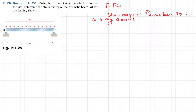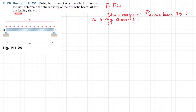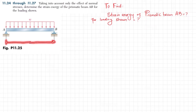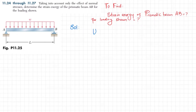Welcome back. Problem 11.25: taking into account only the effect of normal stress, determine the strain energy of prismatic beam AB for the loading shown. This is a simply supported beam AB acted upon by a uniformly distributed load over the length L. We have to find the strain energy of the prismatic beam for the loading shown.